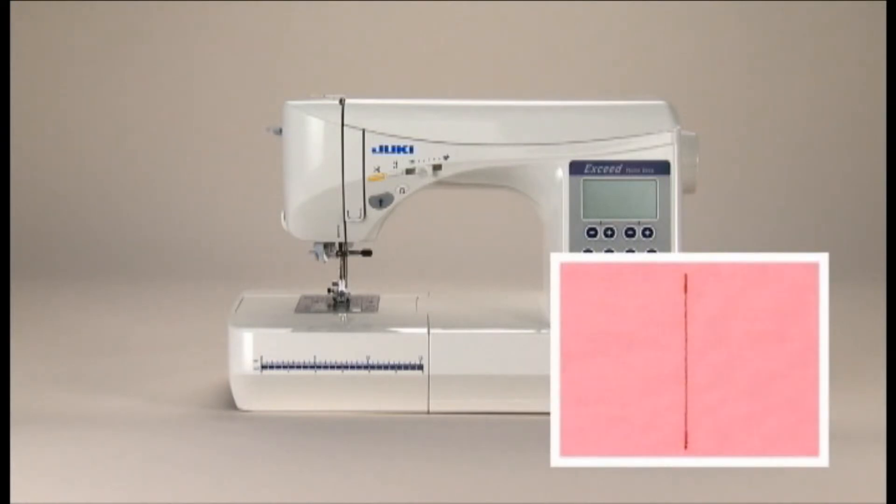The machine can automatically sew lock stitches at the beginning and end of sewing and then trim the threads. We'll use a straight stitch as an example.